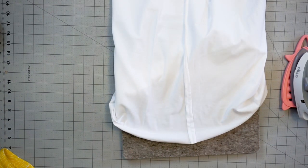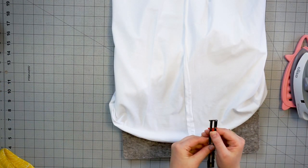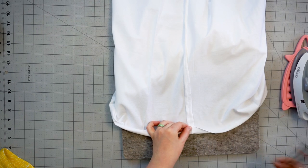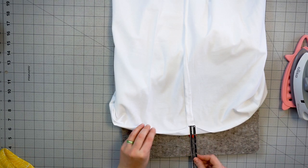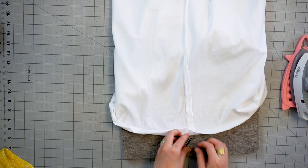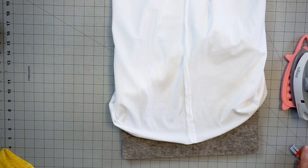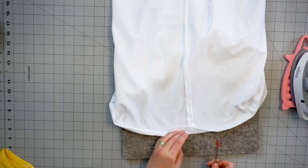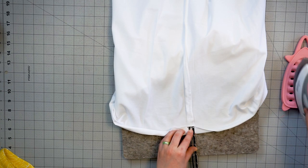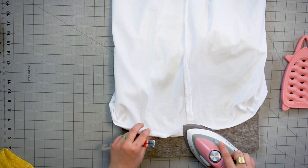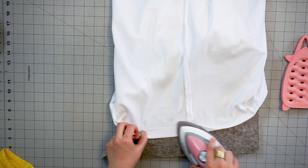I just take my sewing gauge, and I like a nice thick hem with a knit and a twin needle, so I'm going to press it up—let's say three-quarters of an inch. Since this is a knit, I'm not going to go too hot on my iron.